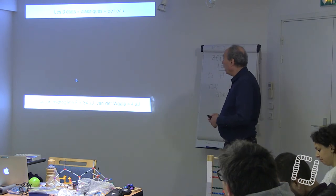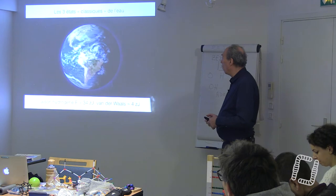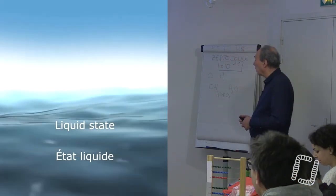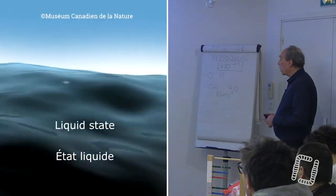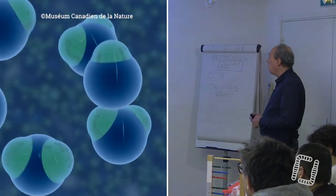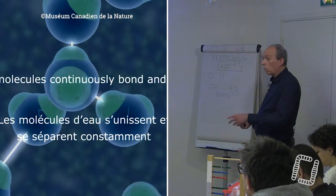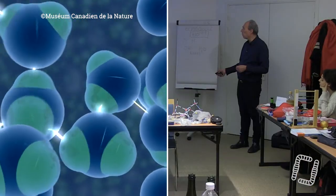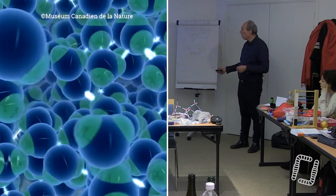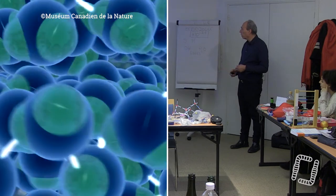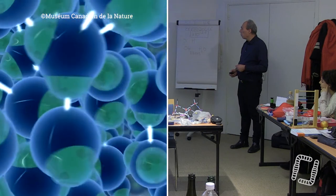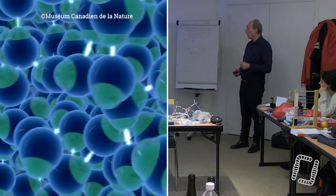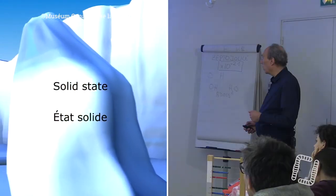Qu'est-ce qu'on peut faire avec ça ? On va définir ce qu'on appelle les trois états classiques de l'eau. Premièrement, l'état liquide. On retrouve les ponts hydrogènes, entre un hydrogène et un oxygène. De temps en temps, les ponts se cassent et se reforment toutes les 10⁻¹² secondes. Les molécules d'eau ne sont pas séparées les unes des autres — elles forment ce qu'on appelle un assemblage.